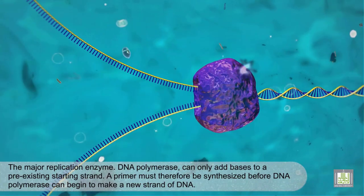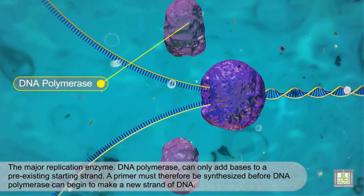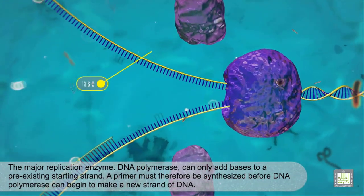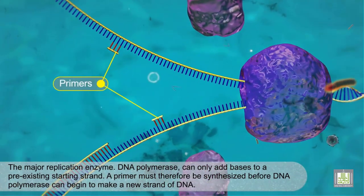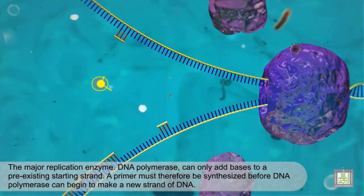The major replication enzyme, DNA polymerase, can only add bases to a pre-existing starting strand. A primer must therefore be synthesized before DNA polymerase can begin to make a new strand of DNA.